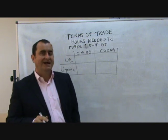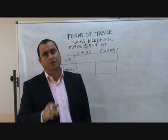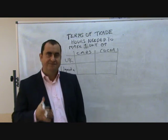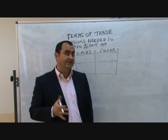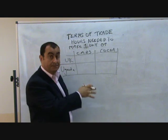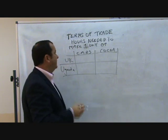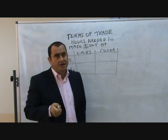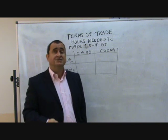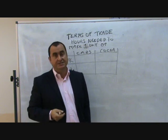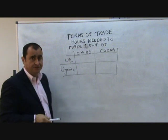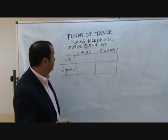Terms of trade have to lie between the opportunity cost ratios for two countries if trade is to take place at all. Let me illustrate this with an example. Imagine there are only two things made in the world — two products: cars and cocoa beans. Imagine there are only two countries in the world: the UK and Uganda.